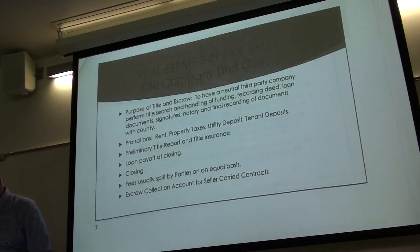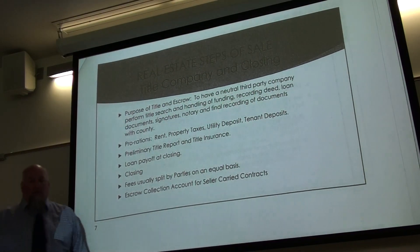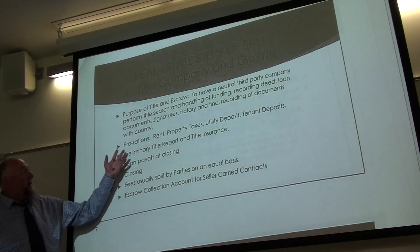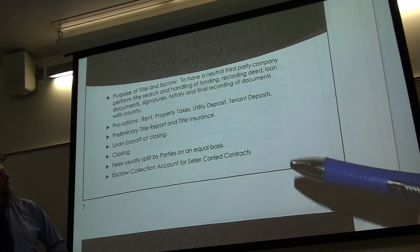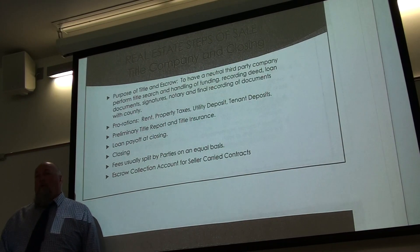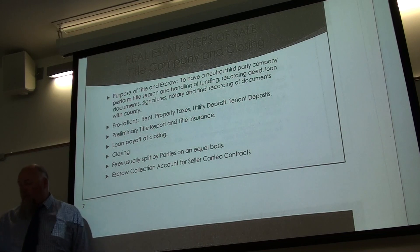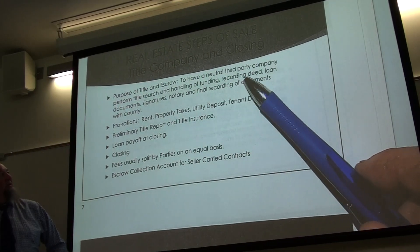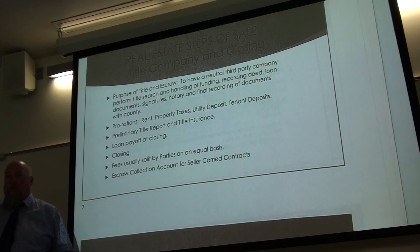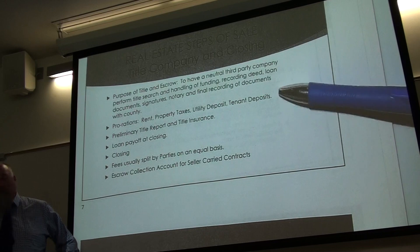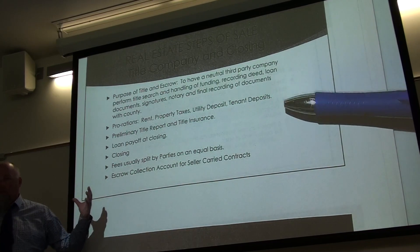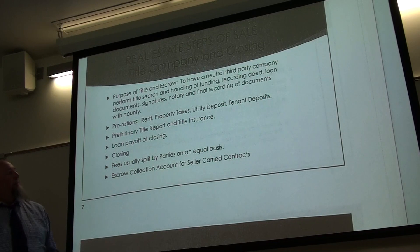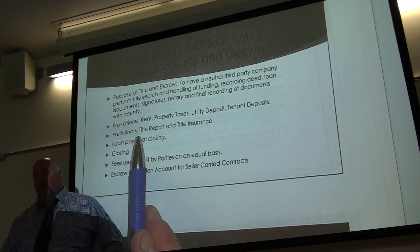The purpose of a title company and escrow is to have a neutral third party perform a title search, handle the funding — getting loan proceeds, paying off any pre-existing seller loans — arrange for signature, notarization, identity verification, and record the documents including the deed and loan documents with the county. The title company also itemizes prorations for taxes, utilities, and tenant deposits, and issues the title report.